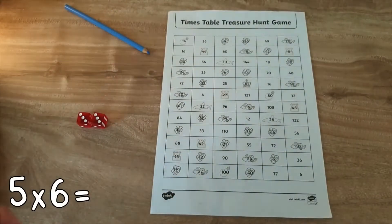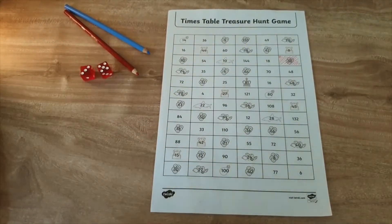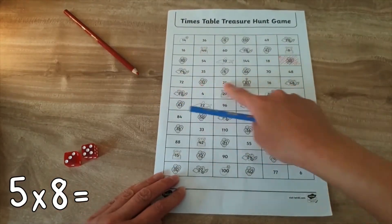To play, children must simply roll two dice, add together the numbers to generate a factor, and then repeat to generate another factor which is then multiplied.